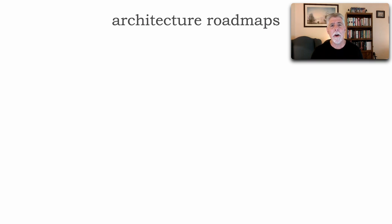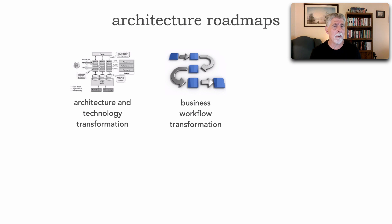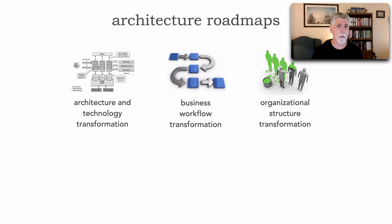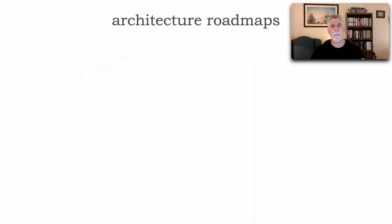When we look at an architecture roadmap, there are really three main contexts. Most of the time we think it's just one big picture, but it really consists of three types of transformation: the architecture and technology transformation, business workflows that may need to change within the organization to achieve a certain initiative, and finally organizational restructuring — especially for larger initiatives. Even something like moving to microservices requires organizational transformation, such as creating DevOps teams and cross-functional teams bridging testers, development teams, and release engineering.